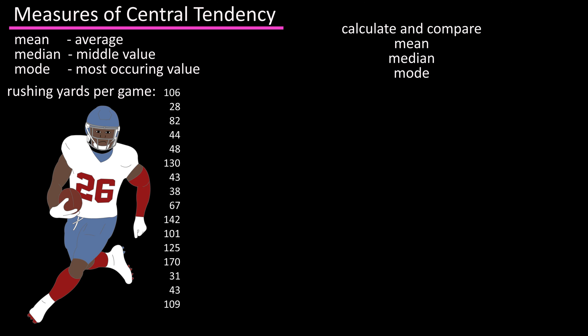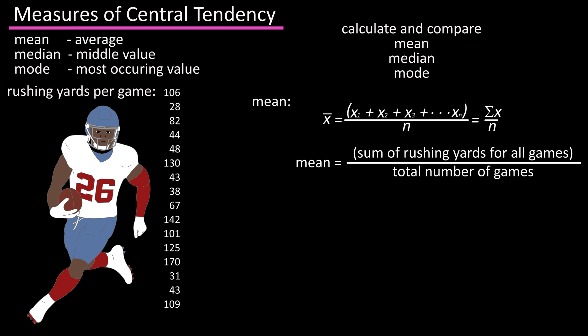We're going to quickly calculate the mean, median, and mode, and compare them for rushing yards per game for this player. To calculate the mean or average, we add up all the values and divide by the total number of values. Adding them up we get 1,307, and there are 16 total values. So 1,307 divided by 16 equals 81.7, which is the mean rushing yards per game for this player.